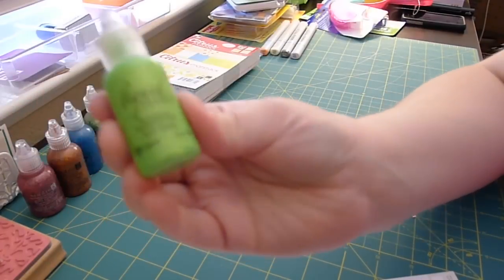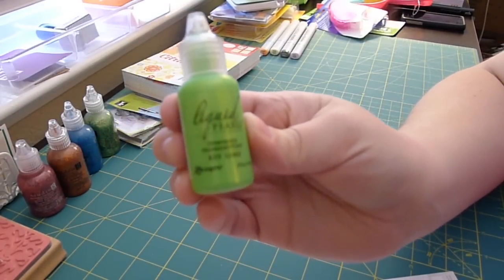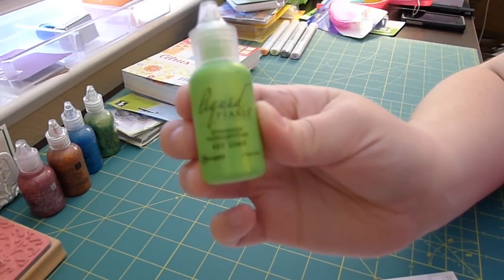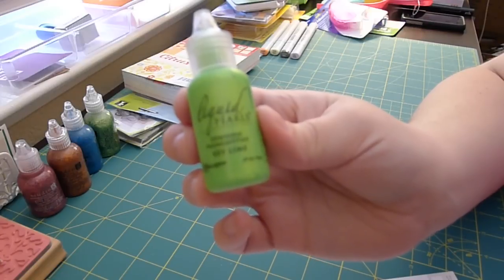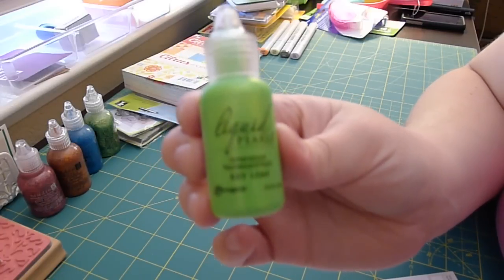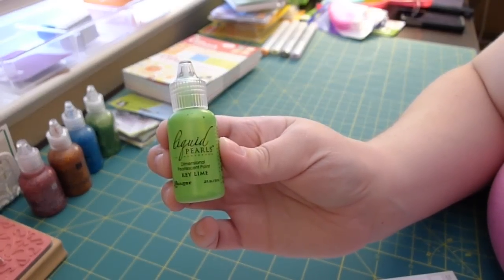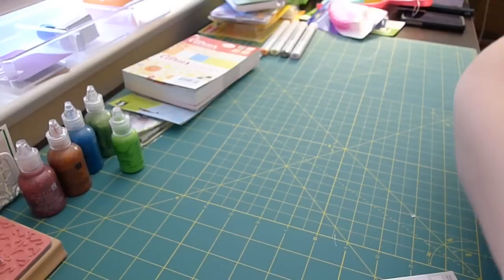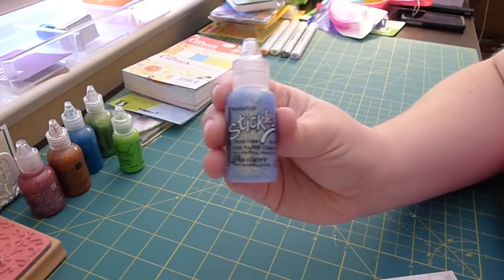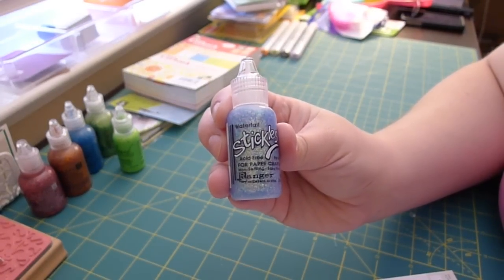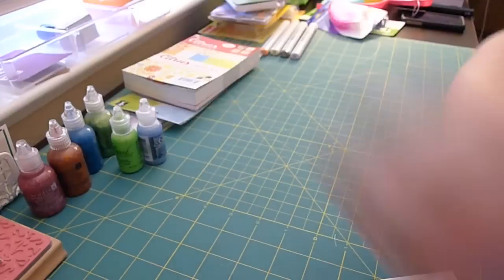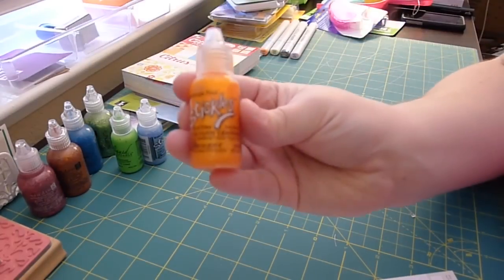I also got this green liquid pearls, because I am loving liquid pearls. I know I'm a little late to the party on that, but they are so awesome. And this is the Key Lime Liquid Pearls. I love it. It's bright. And I got some Stickles. This is Waterfall. And Orange Peel.